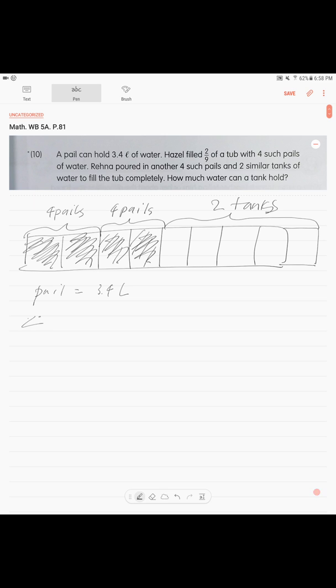So, we have our 4 units. So, we want to know how much the 4 units, which we can see right from here, is 4 pails plus 4 pails, total of 8 pails.